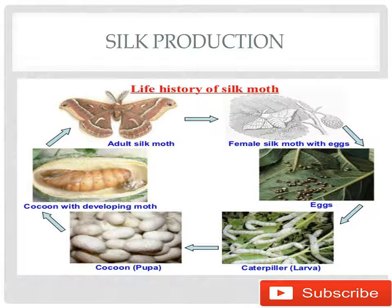Silk production: a female silk moth lays eggs which are incubated at 25 degrees Celsius. After three to four weeks, the eggs form larvae. The larvae feed on mulberry trees in a process called molting. The caterpillar then forms a cocoon, which is called the pupa stage, completing this stage in about a week.